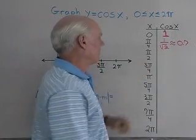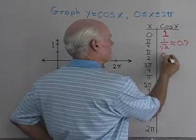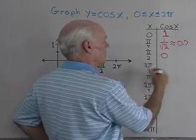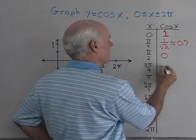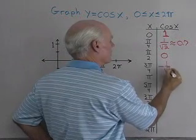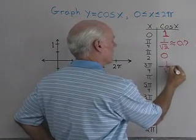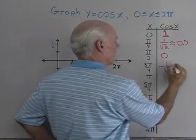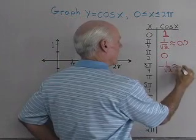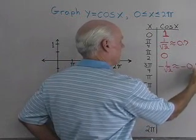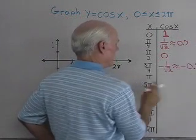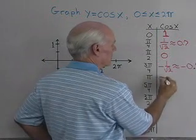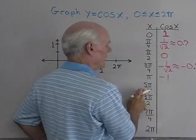Cosine of pi over two is going to be zero. Cosine of three pi over four is going to be negative one over square root two, so I'll approximate that with negative 0.7. Cosine of pi is going to be negative one.